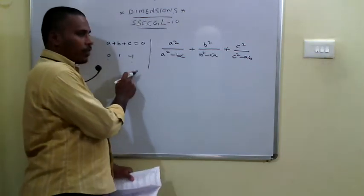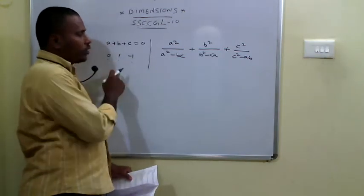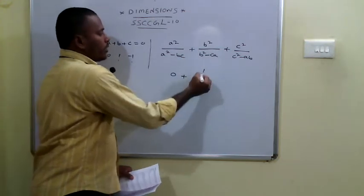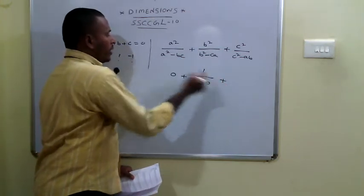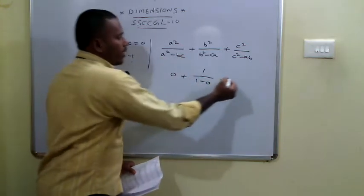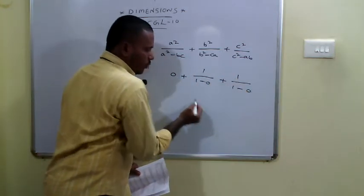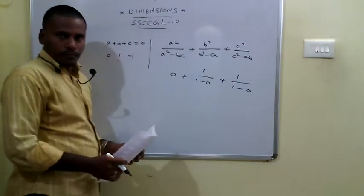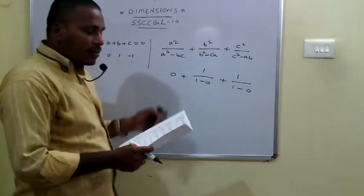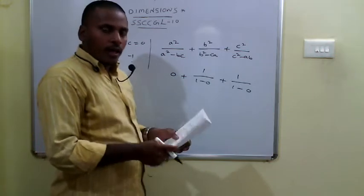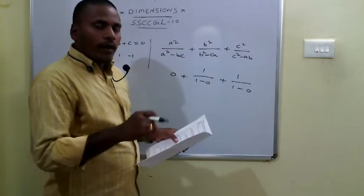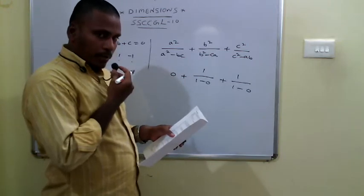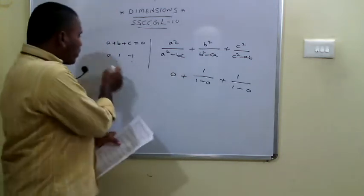Since a = 0, b = 1, c = −1, substituting: the first term is 0, the second term is 1/(1 − 0) = 1, and the third term is 1/(1 − 0) = 1. So the answer is 0 + 1 + 1 = 2. For such problems, consider certain values for a, b, and c satisfying the given condition.